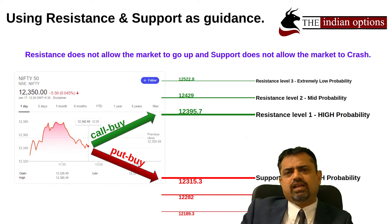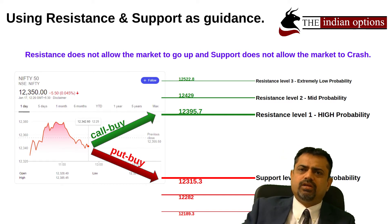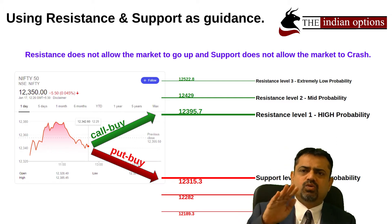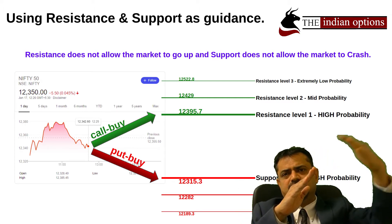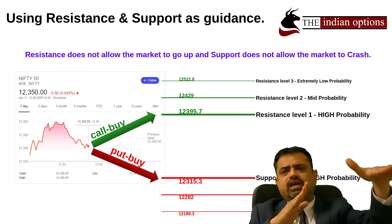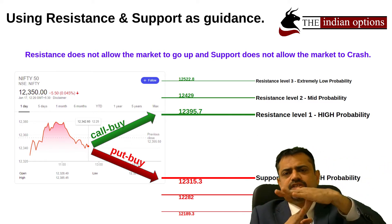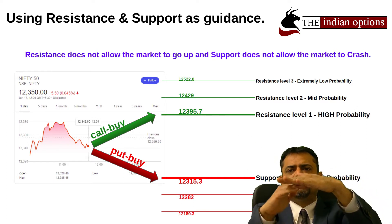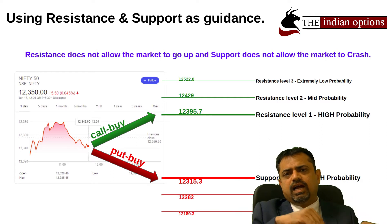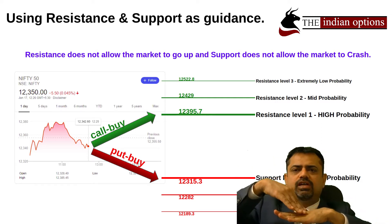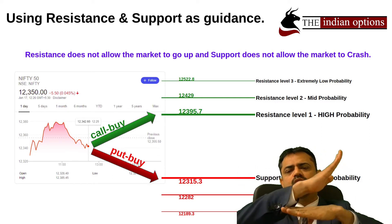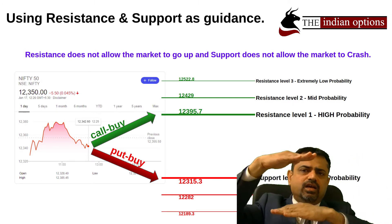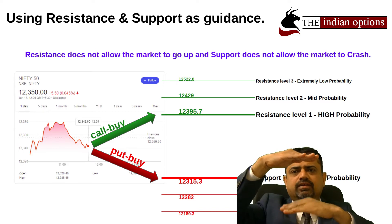Let me quickly recap what support and resistance are. When the market tries to go up in one direction, there is an imaginary line called resistance. As soon as the market hits the resistance it will reverse direction and start to go down, until it reaches the support level, and then it starts to go up again. So the market is bound by two imaginary lines — the resistance line and the support line.